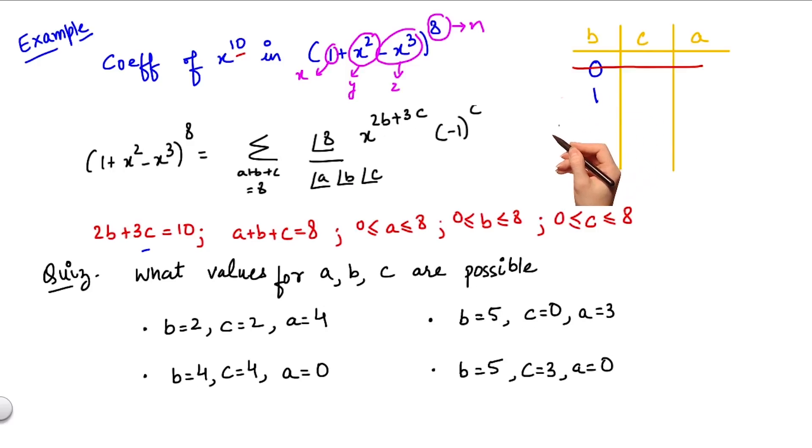Let's move to b equals 1. In this case, 3c would be equal to 8, hence c would again be 8 by 3, which is a fraction. Therefore, even this case is not possible.